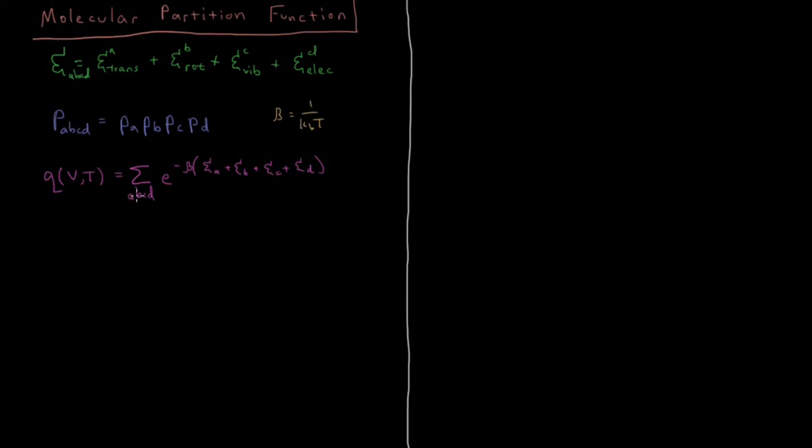And also, since these indices don't have any dependence on one another, they're independent indices, we can do the following refactorization of this formula here. We can factorize this as sum over a, the translational part, e to the minus beta ea, times sum over b, e to the minus beta epsilon b, for rotational part. You see we're separating out all these indices and just summing them independently here. C for vibrations, and d for the electronic part, epsilon d.